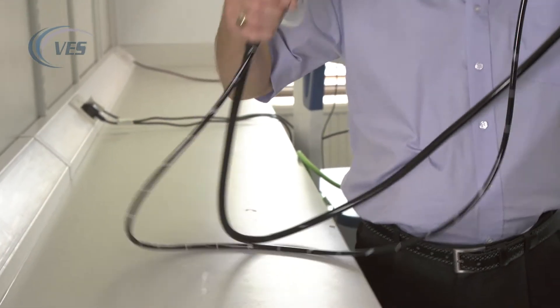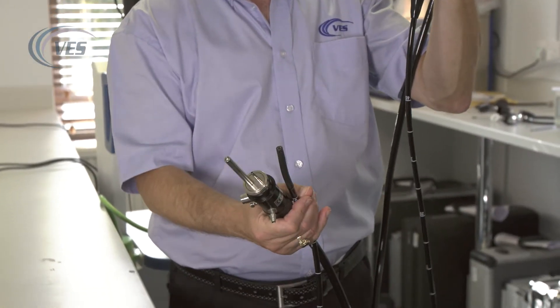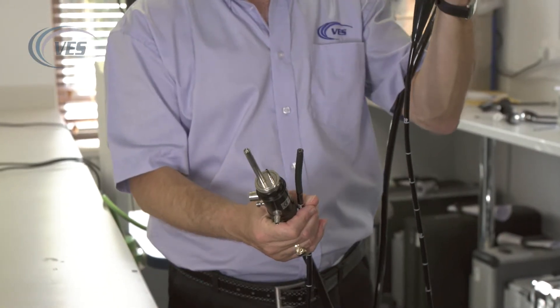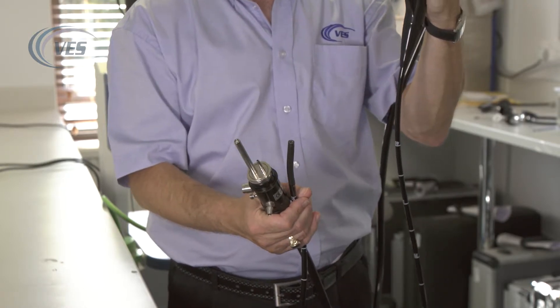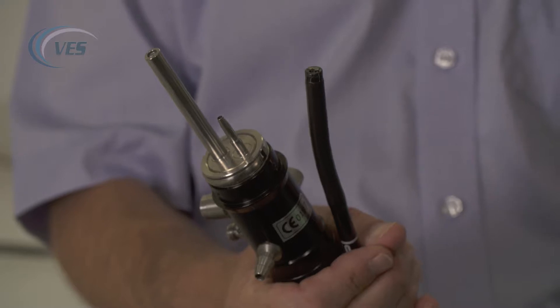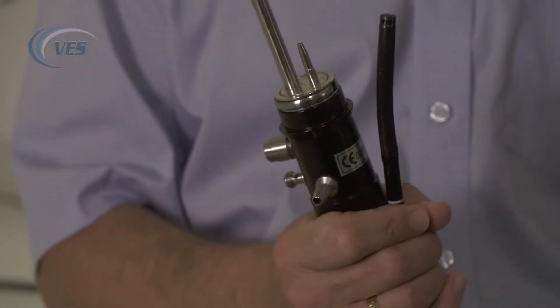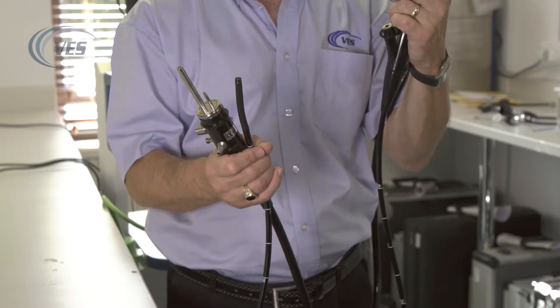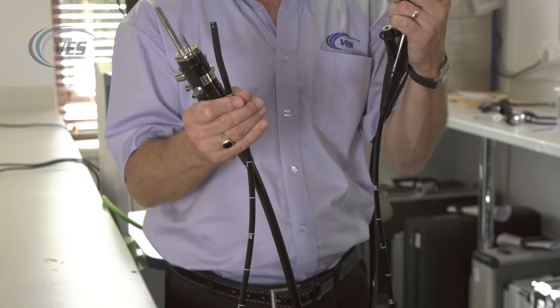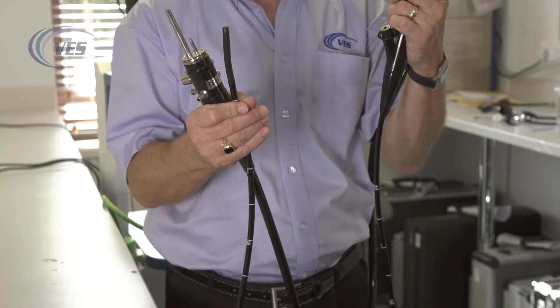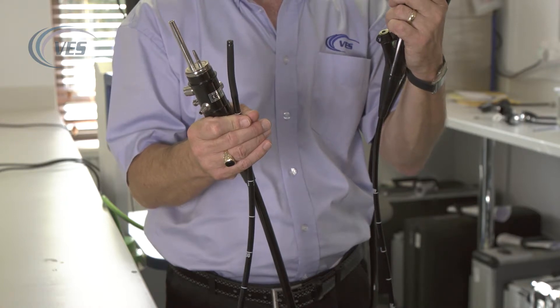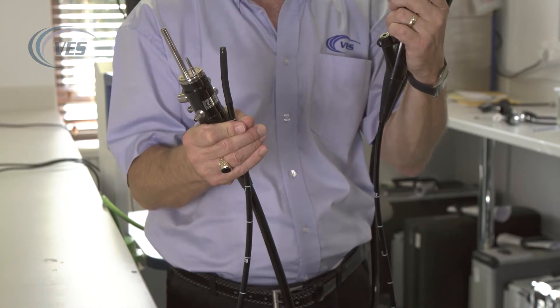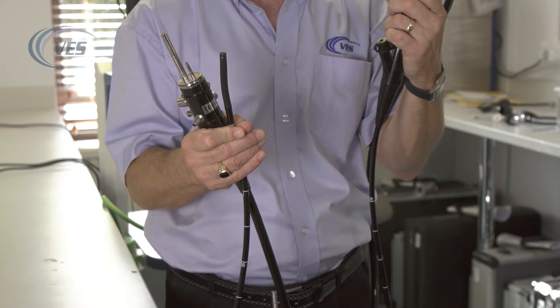Storing the scope ideally is hanging up with the patient tube inside a protective down pipe or drain pipe. If it has to be stored in the storage case, when you put the scope away, make sure that the end of the tip is safely tucked into the case. Don't jam the case on top of the patient tube. You will cause irreparable damage.